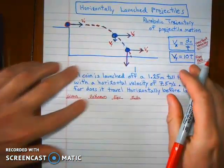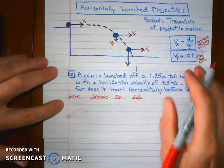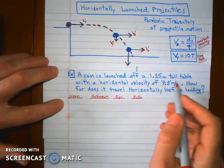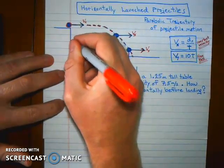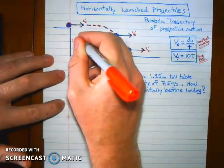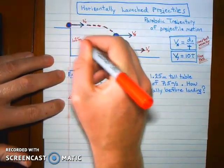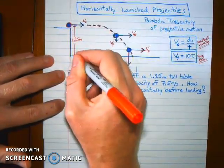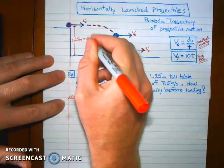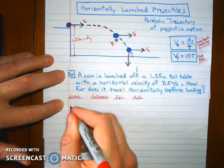Just like you have here. And if the table is a 1.25 meter tall table, so if that's the height of the table, 1.25 meters, that's the distance that the coin is going to fall in the vertical direction. So that is your dy variable. So write that down as your given.